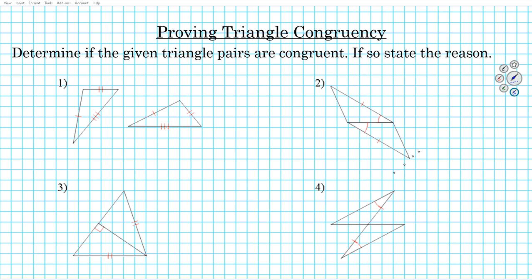So let's take a look at these five examples and then we have some practice problems for you to try out. For reference, the five methods are: method one SSS, method two SAS, method three ASA, method four AAS, and method five RHL. Remember, you have to have all of the required corresponding parts in order to use each method.